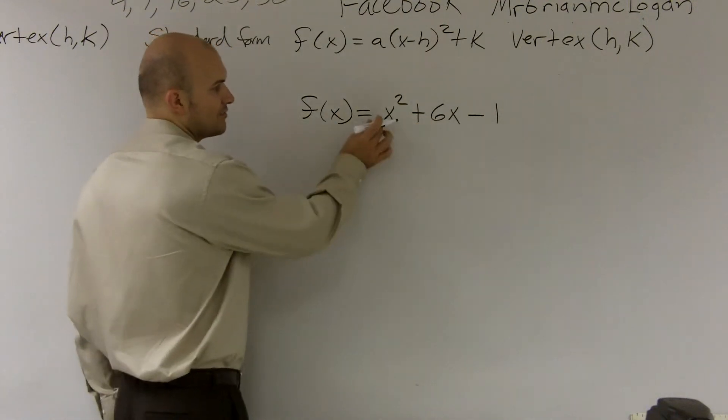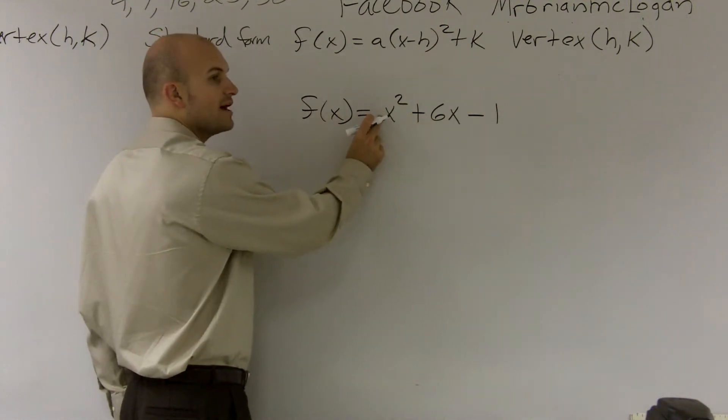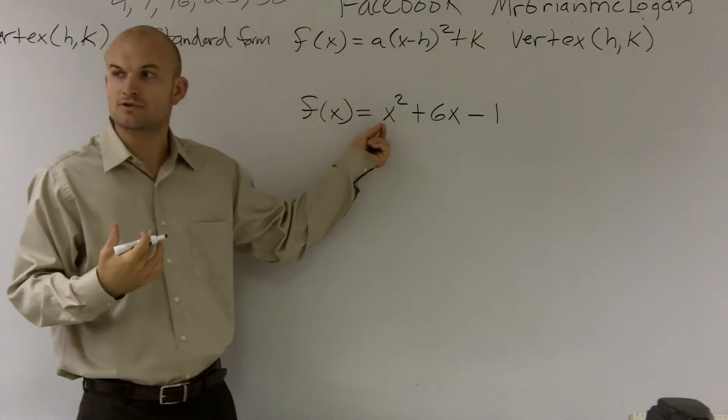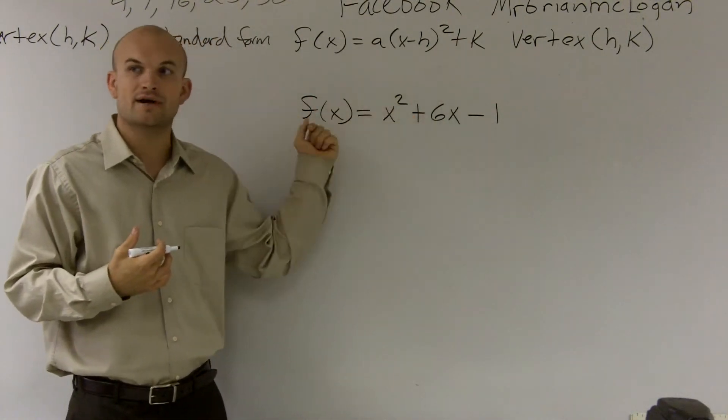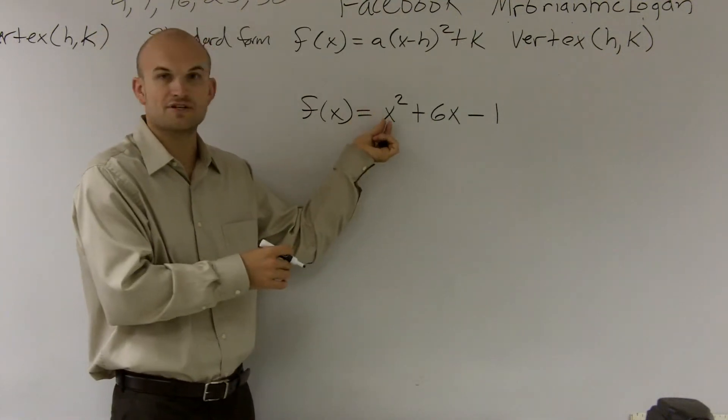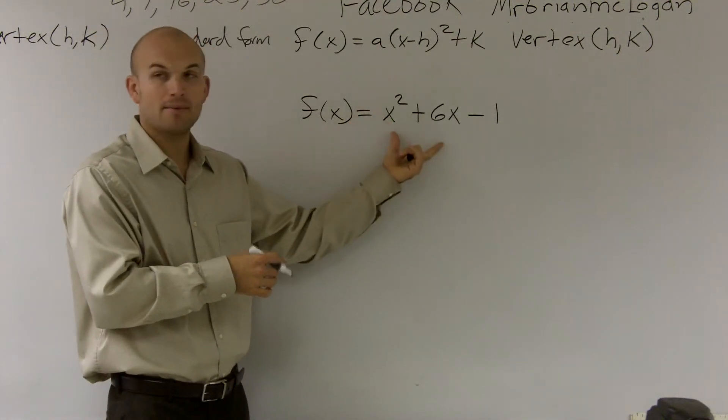First thing we always want to do is make sure we have nothing in front of our x squared. If there was something in front of this x squared, which I will do a couple problems like that, you're going to have to factor it out.